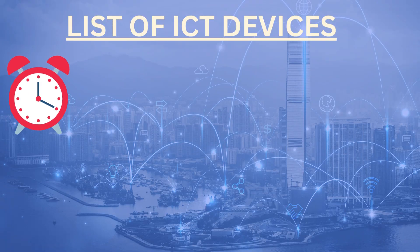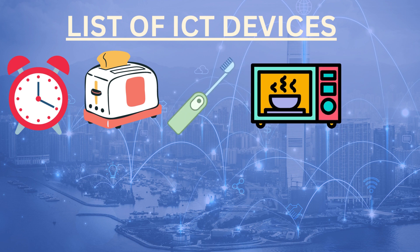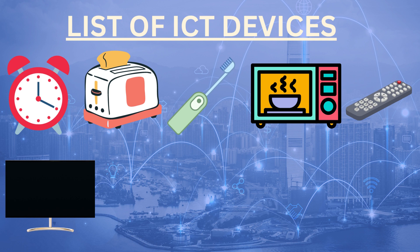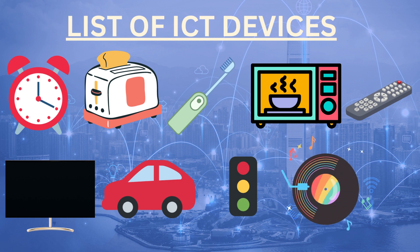Let's identify them. The alarm clock is an ICT device because it tells you the time and stores data. Then there's the electric toaster or coffee maker, the electric toothbrush, and the microwave for heating up the milk — all ICT devices. The TV remote uses signals to turn the TV on, and the TV itself is a great example of an ICT device because satellites broadcast news to your TV. Then there's the car using GPS, the traffic light, and the music player in the car.